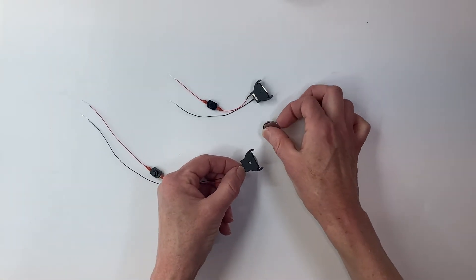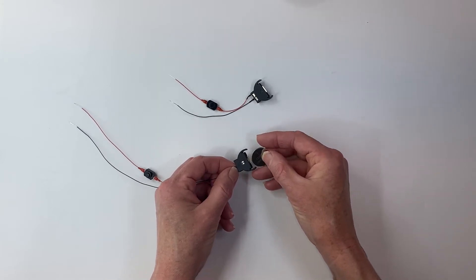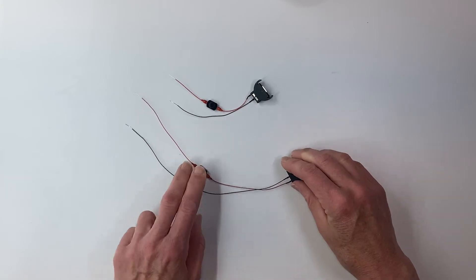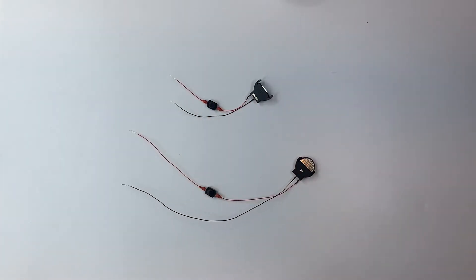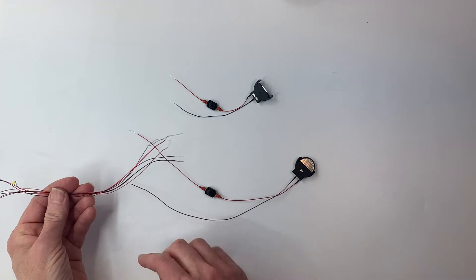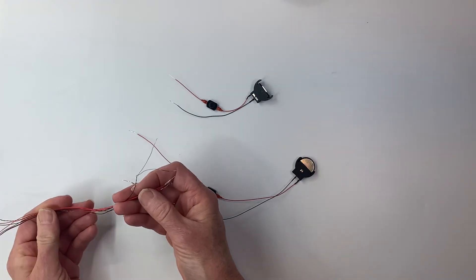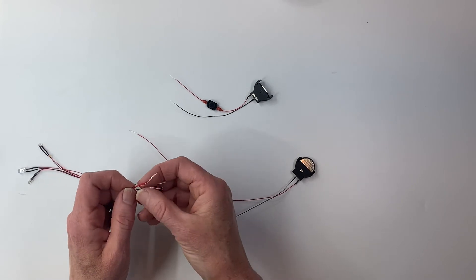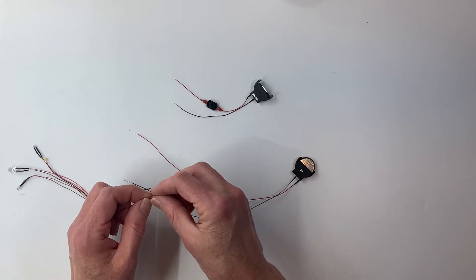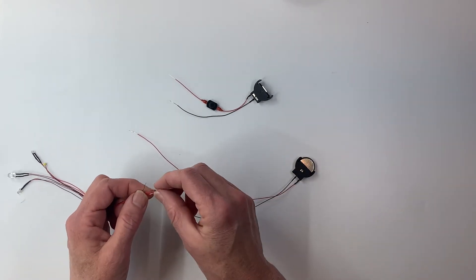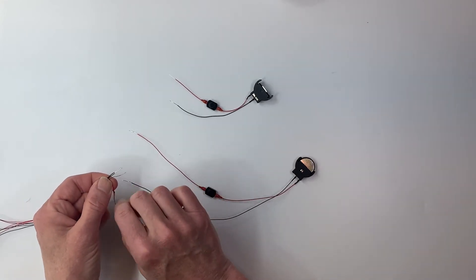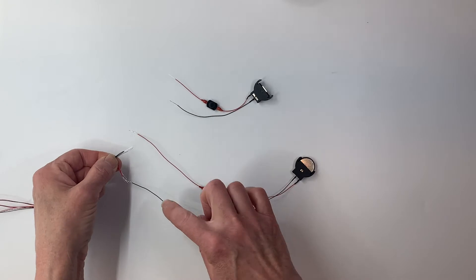This coin cell holder is meant to hold one of these lithium batteries. So I'm just going to slip that in. Now you'll notice that we have red and black wires. All of our lights also have red and black wires and you can use this coin cell holder to light any of our three-volt LEDs. This is a three-volt coin cell holder. So basically all the red and black on the lights go to the red and black on the coin cell holder.